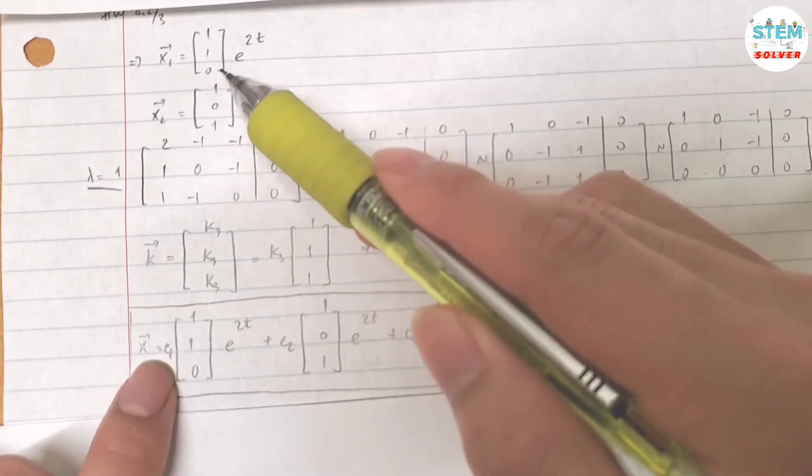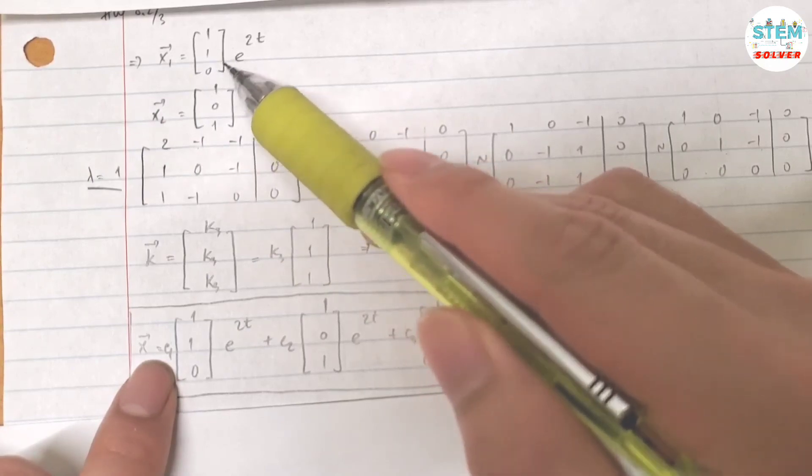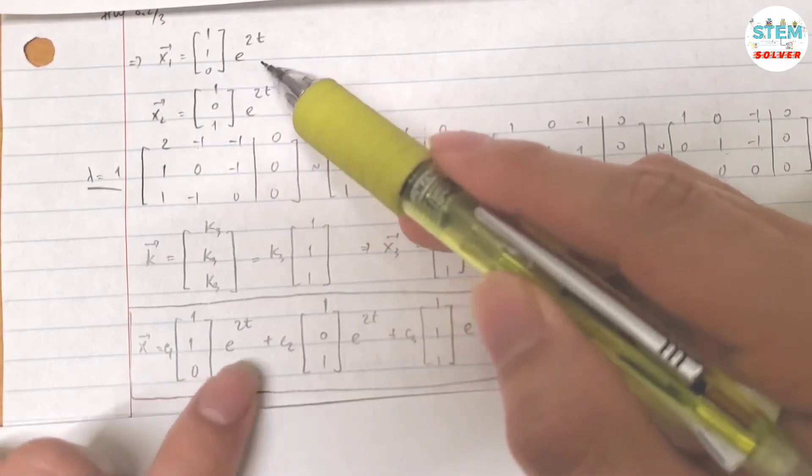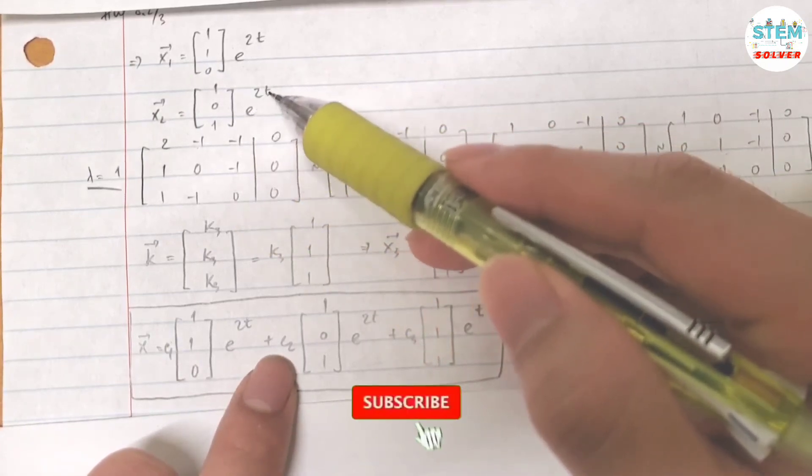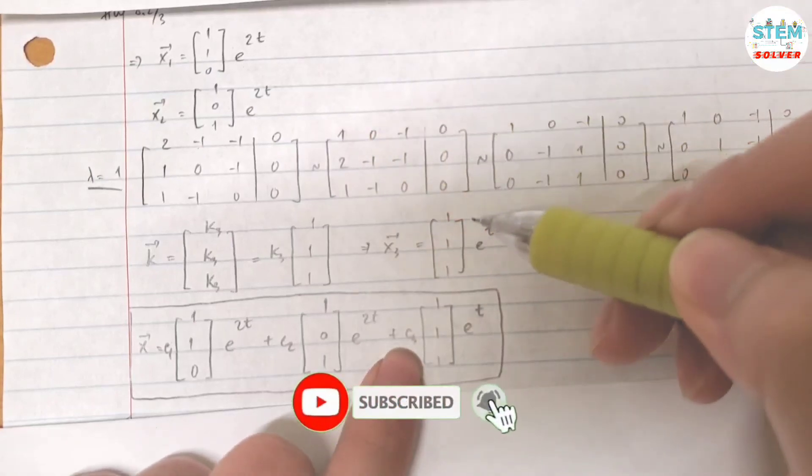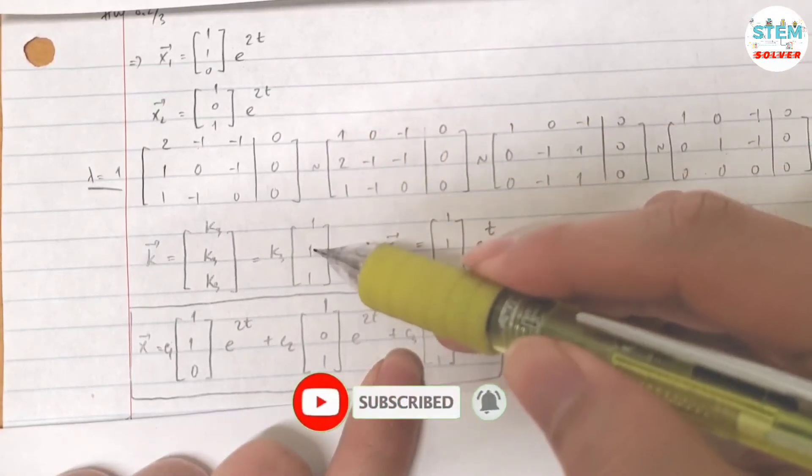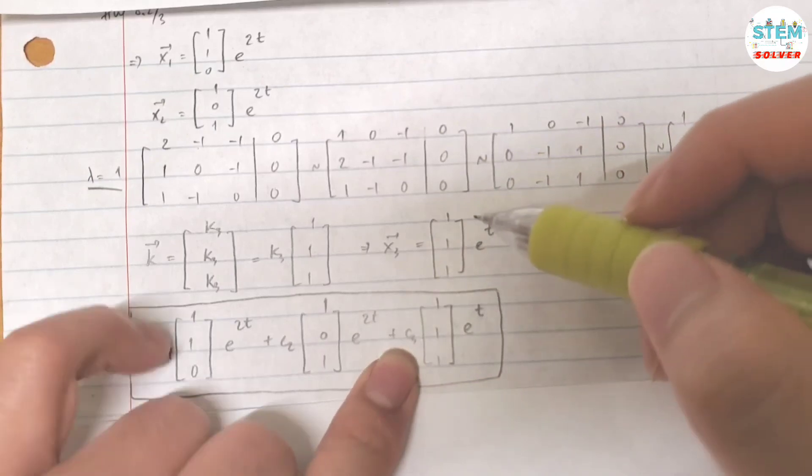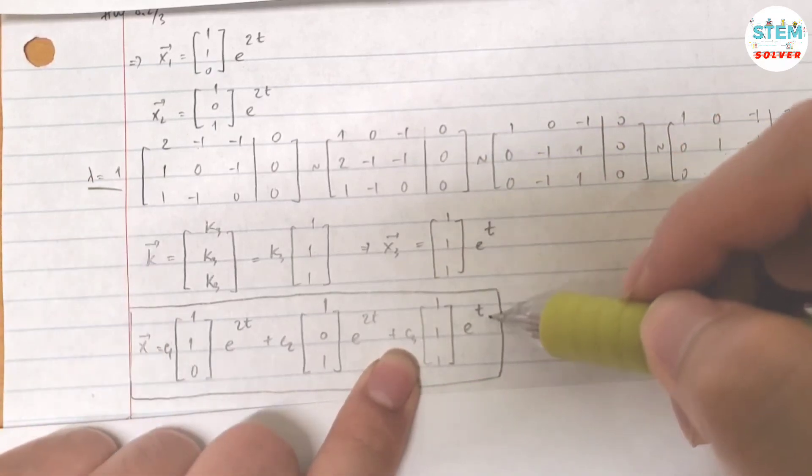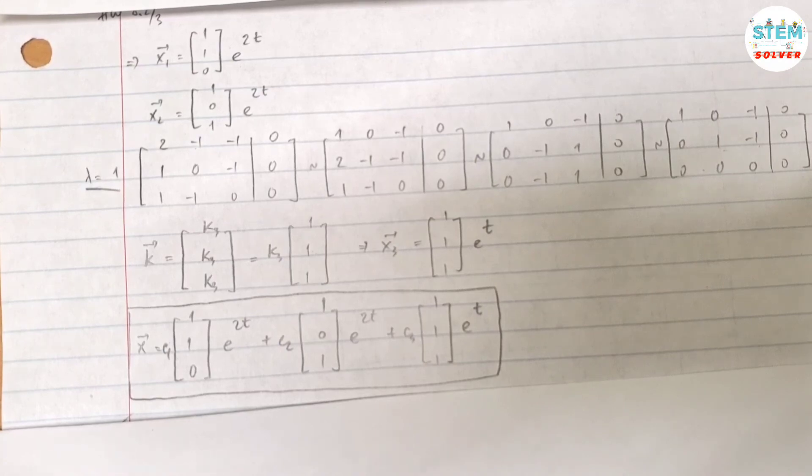So c1 times k1 e to the lambda t which is 2t, plus c2 times k2 which is this e to the lambda t which is e to the 2t, plus c3 times k3 which is this one, times e to the lambda t, and lambda is 1, so you have e to the t. Hope that makes sense, that's it.